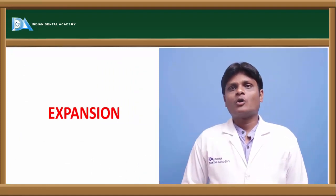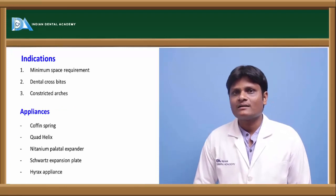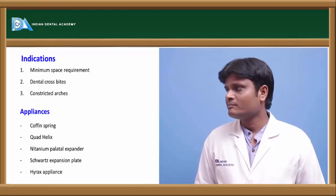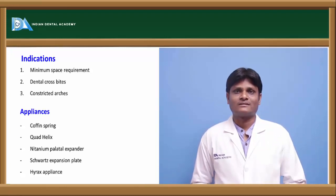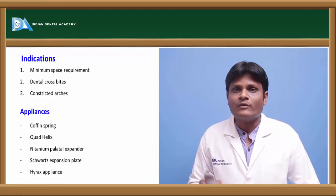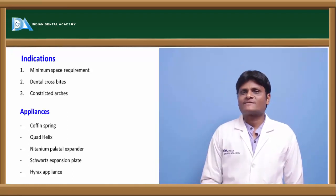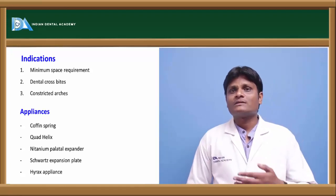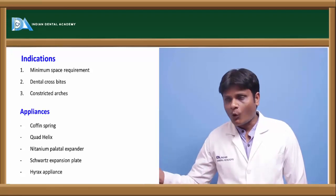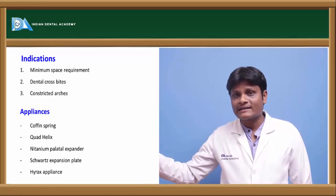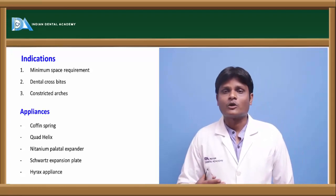The next important method of gaining space is expansion. Indications for expansion include cases where space requirement is minimum, cases with dental crossbites, and severely constricted arches. Expansion can be carried out using a number of appliances — both removable and fixed — such as the coffin spring, quad helix, nitide (nickel titanium) expander, Schwartz appliance, or Herax appliance.